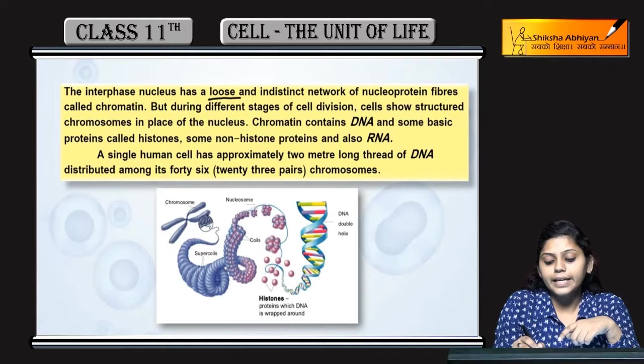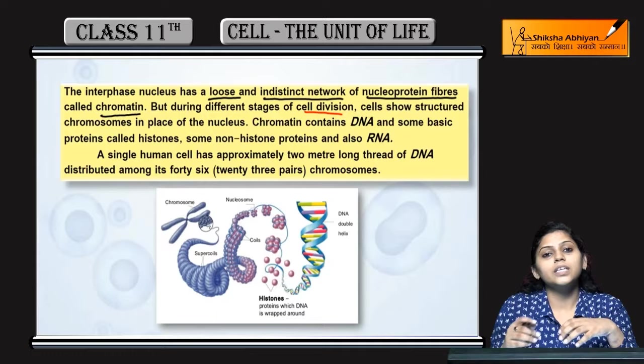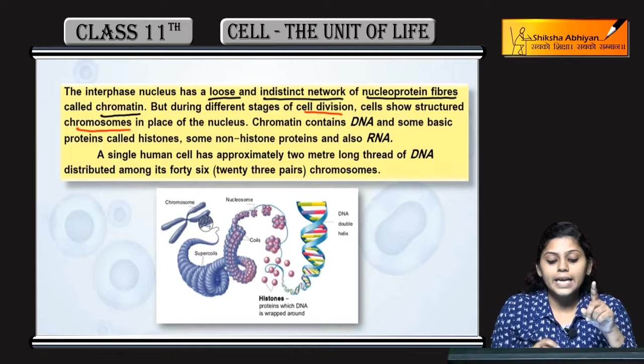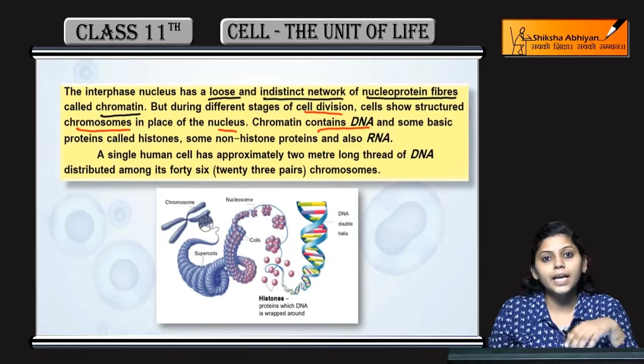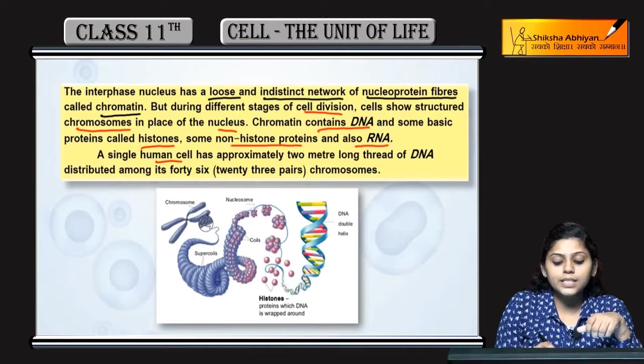Interphase nucleus mein long indistinct network hota hai nucleoprotein fibers ka, jise ham chromatin kahte hain. But during different stages of cell division, chromosomes different structures show karte hain in the place of chromatin. Jo chromatin hai, that contains DNA aur kuch basic proteins jinhe histones bolte hain. Kuch non-histone proteins bhi ho sakti hain, aur RNA bhi present ho sakti hai.